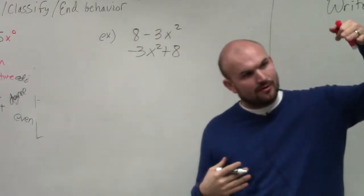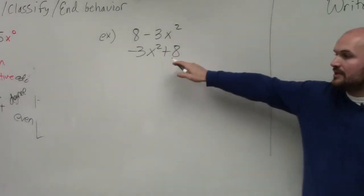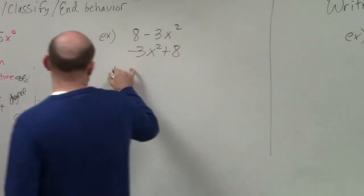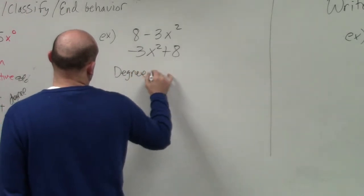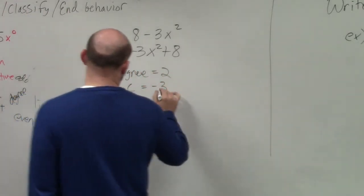Now I have my highest power first going down in descending order. Therefore, I can determine that my degree is equal to 2, and my leading coefficient is -3.